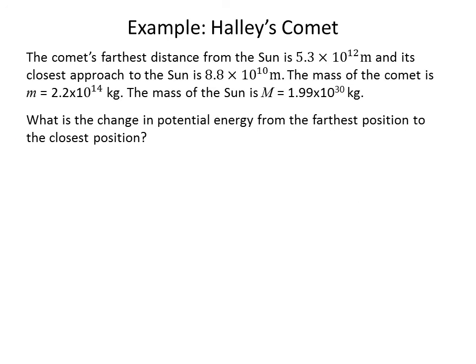Let's look at an example. We'll look at Halley's Comet. This comet's farthest distance from the sun is 5.3 times 10 to the 12th meters, and its closest approach to the sun is 8.8 times 10 to the 10th meters. The mass of the comet is 2.2 times 10 to the 14th kilograms, whereas the mass of the sun is equal to 1.99 times 10 to the 30th kilograms. What is the change in potential energy from the farthest position of the comet to the closest position?